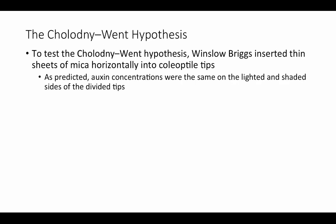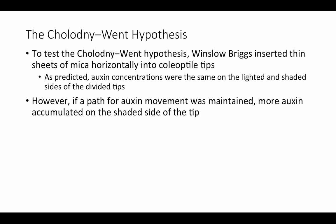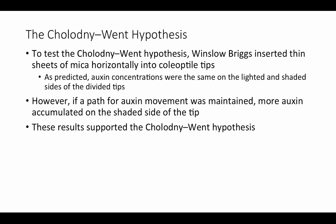To test this hypothesis, scientist Winslow Briggs inserted thin sheets of mica horizontally into coleoptal tips. As predicted, auxin concentrations were the same on the lighted and shaded sides of divided tips — no difference in auxin production between shaded and lit sides at the tip. But when a path was available for auxin transmission down the stem, more auxin accumulated on the shaded side. This means it's not an increase in production but an increase in transport of auxin down the stem that causes this response.